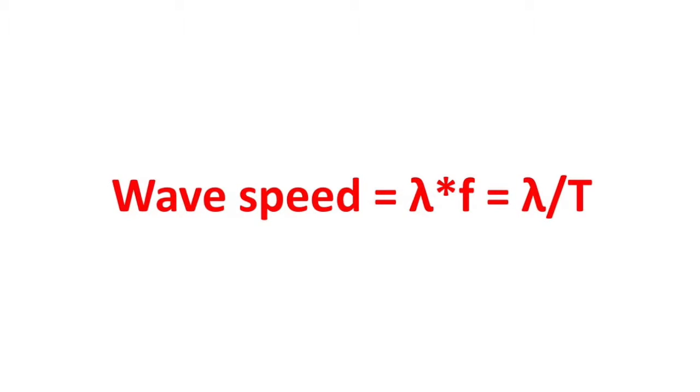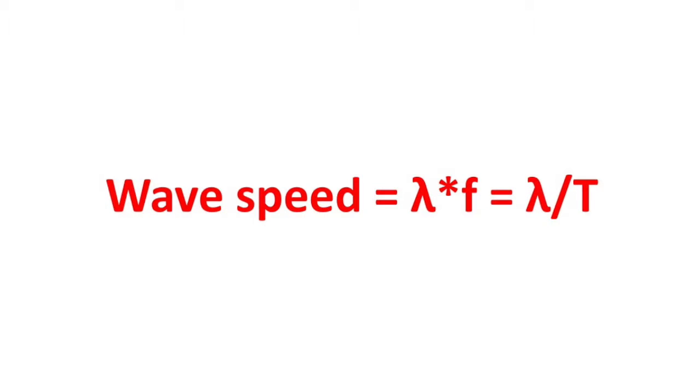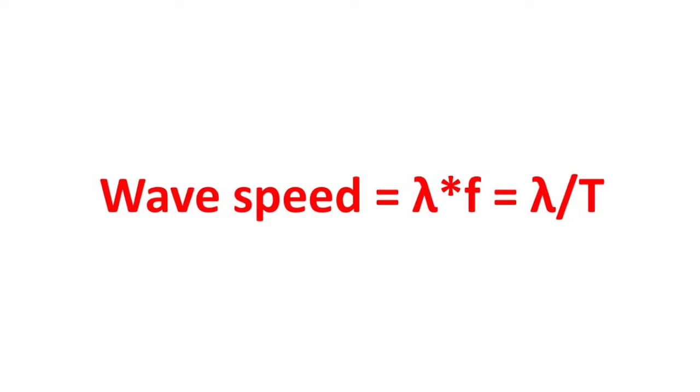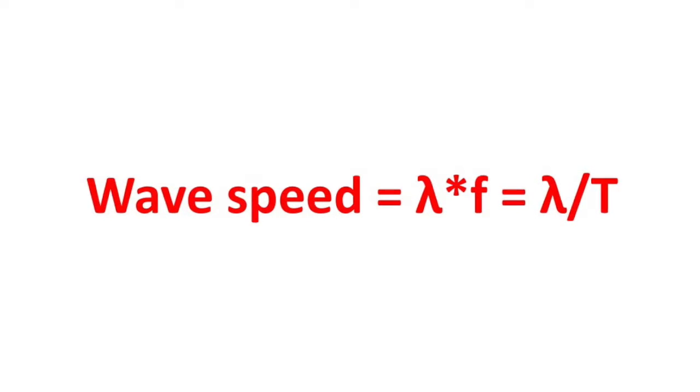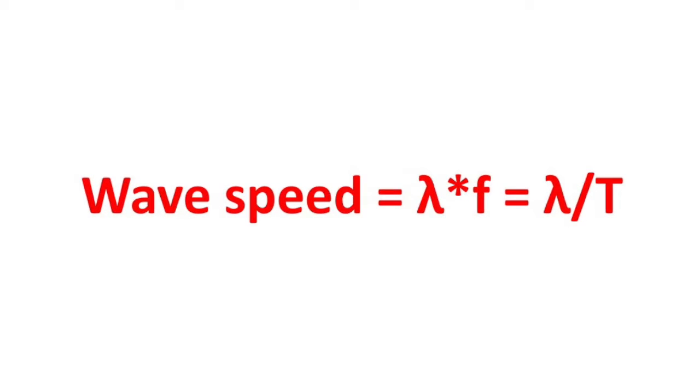It is related to wavelength and frequency, and also period, in the following manner. It is the length of the cycle, or wavelength, divided by the amount of time it takes for one cycle, period, or in terms of frequency, C is equal to lambda times frequency. Or you can think of this as C is equal to lambda times 1 over T.